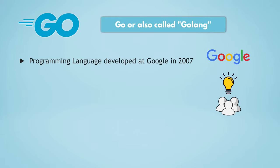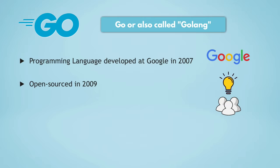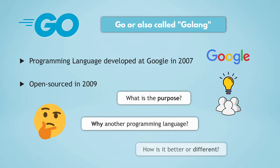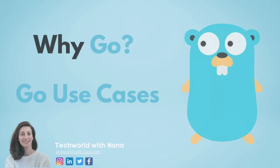Go was created by Google in 2007 and open sourced in 2009, so it's a pretty young language. Whenever you hear about a new programming language, the first question you probably have is: why do we need yet another programming language? What is the purpose of it, or how is it better or different from other already existing languages? So before diving into the syntax, let's see what was the motivation behind creating Go.